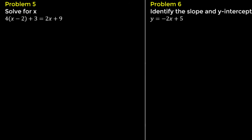Problem 5. Solve for x: 4 times the quantity x minus 2 plus 3 equals 2x plus 9. Distribute to get 4x minus 8 plus 3 equals 2x plus 9. Combine the constants on the left side: 4x minus 5 equals 2x plus 9.